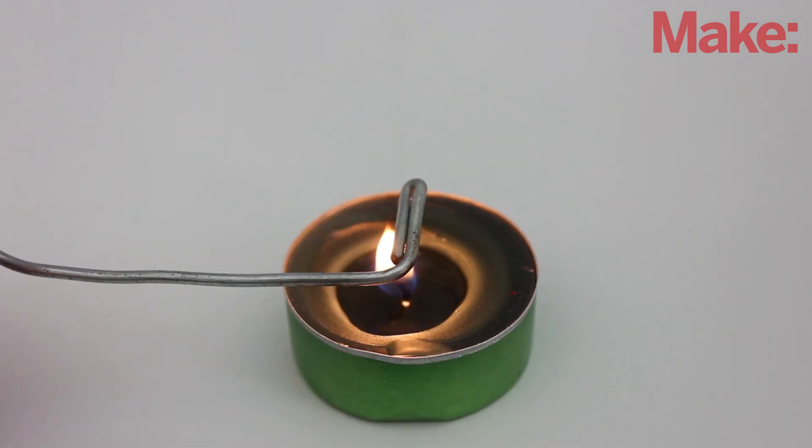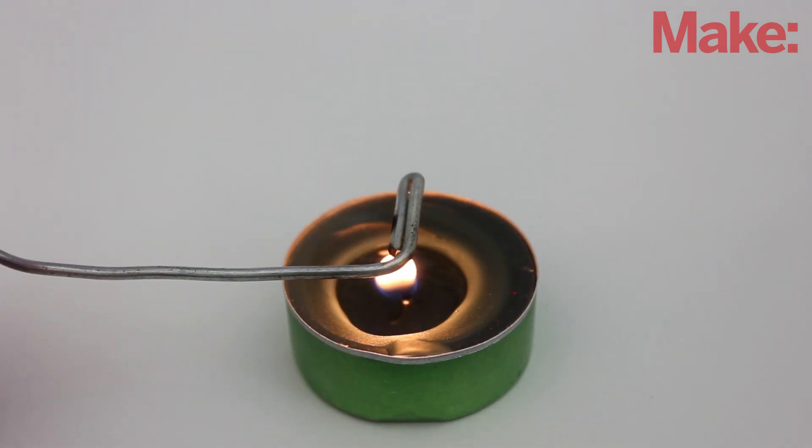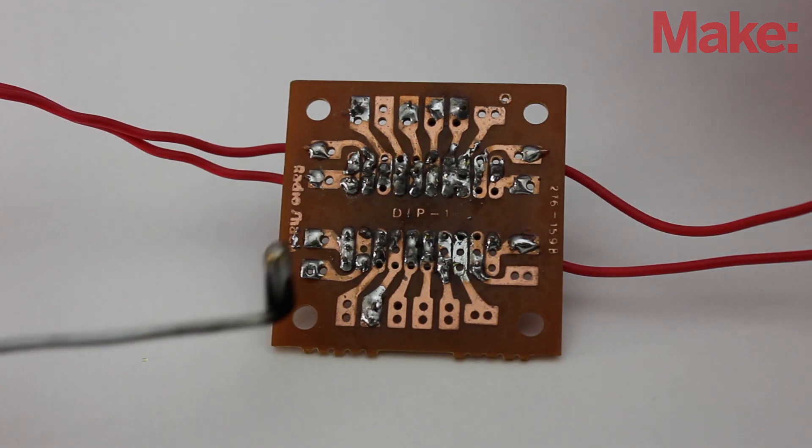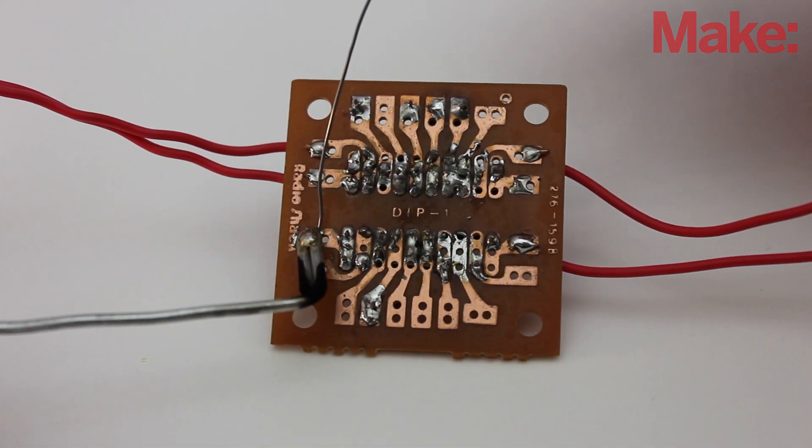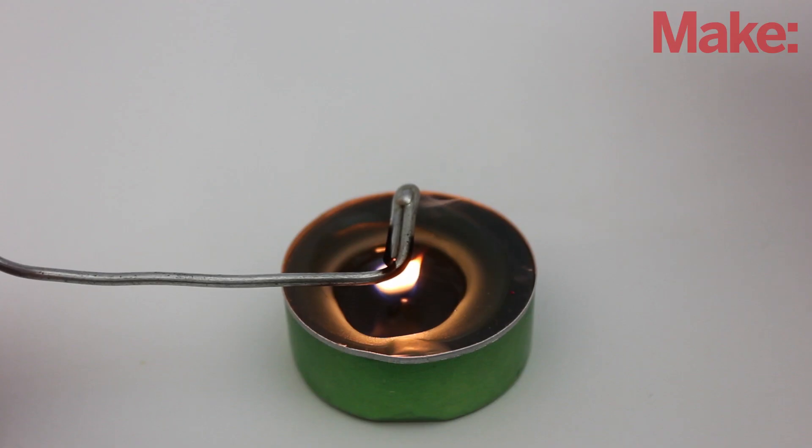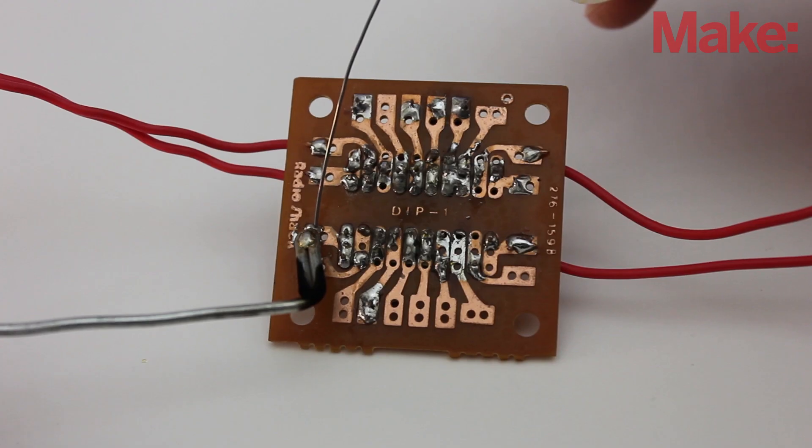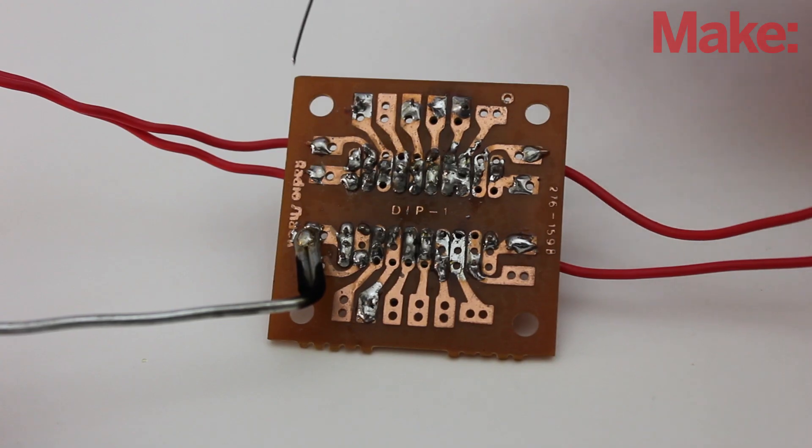To heat it up, just hold the corner over the flame for about 20 seconds. Then quickly move it to the circuit board that you want to solder. You should have enough heat to solder one or two connections. Then move the tool back over the flame to reheat it. Repeat this process until you're done soldering.